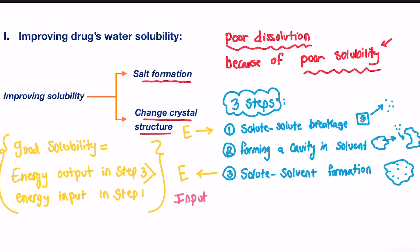The input energy depends on the strength of solute-solute interaction, so how strong the bond between the drug particles, or how hard it is to break this interaction, which can be determined by melting point, crystal structure, and solid state property. While energy output in step three depends on solute-solvent interaction, which is determined by polarity and ionization. Now if we get this concept well, understanding the methods will not be hard.